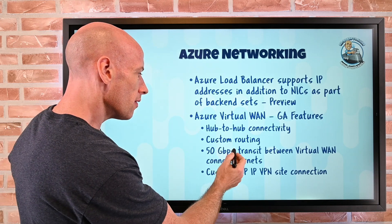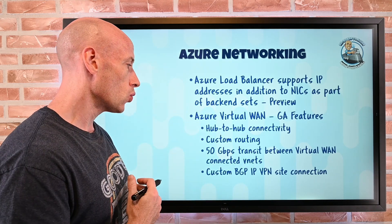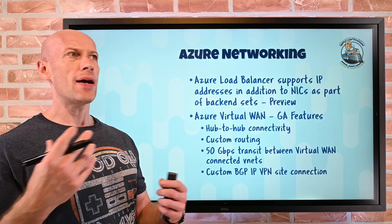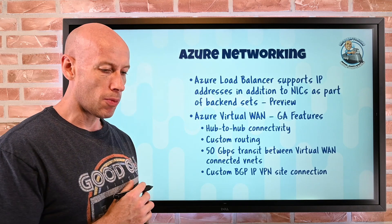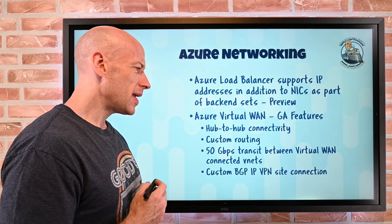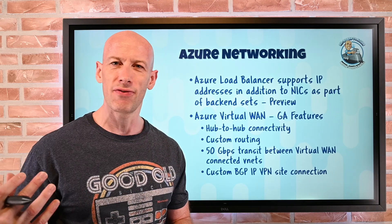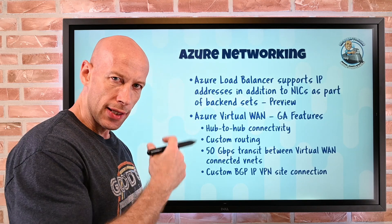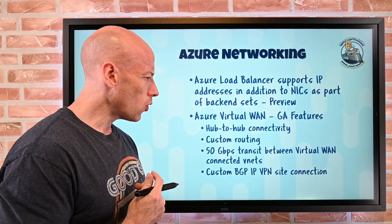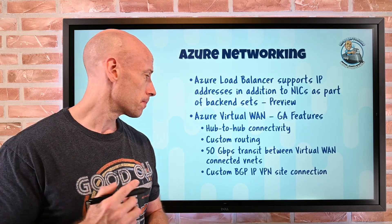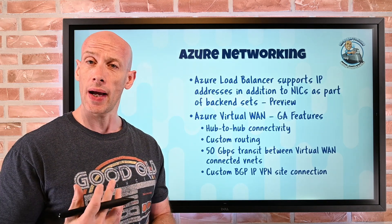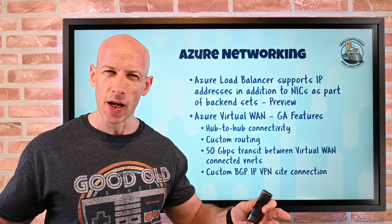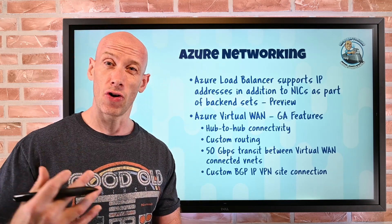Other features: 50 gigabit per second transit between Virtual WAN connected VNets, giving huge amounts of connectivity. Custom routing lets you set up your own route tables and traffic priorities over your Virtual WAN. You can now use BGP IP site configuration using the 169.254.21.22 range — normally used when a DHCP server can't be found — as part of your VPN configuration. New virtual WAN appliances were also announced. All these capabilities are really about simplifying connectivity between main locations and branch offices.